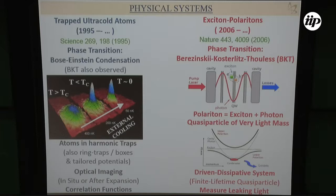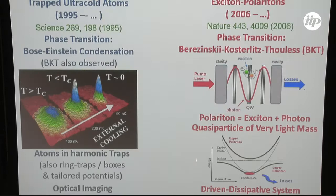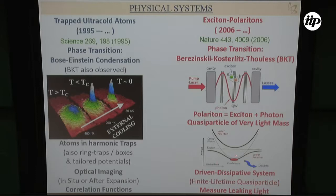An exciton polariton is an intrinsically unstable quasiparticle. The idea is that you have quantum wells and a cavity, you're shining in a laser, and there are losses. The exciton on the quantum well builds a short-lived — about a picosecond — quasiparticle with the photon: that's called a polariton. You change the dispersion relation and have an upper and lower polariton branch. All the condensation or coherence growth is happening at the bottom of this, but the quasiparticle itself is decaying.